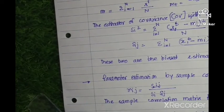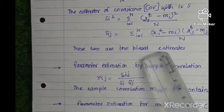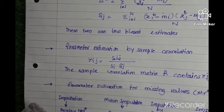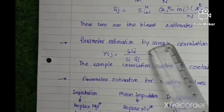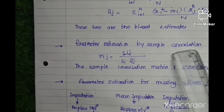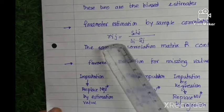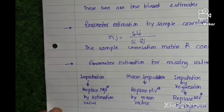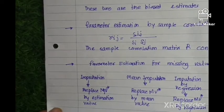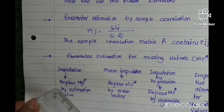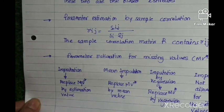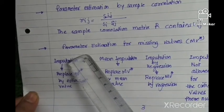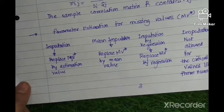We can calculate parameter estimation using statistics for n number of things: correlation — whether two things are related or independent; covariance matrix; sample mean; and sample correlation using this particular formula. The sample correlation R_{ij} tells us whether multivariate samples with n columns are dependent or independent. This also helps solve research problems, and we can perform parameter estimation for missing values in data science.